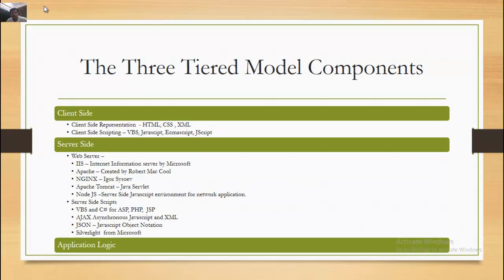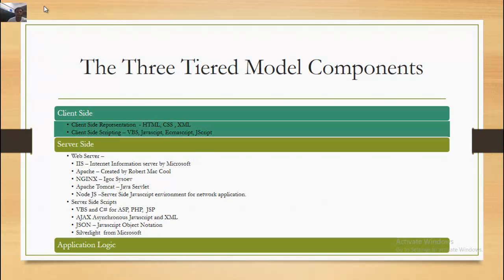In this model, content can be dynamically loaded and saved. The script language used most often on the client side is JavaScript. The 3-Tier Model client-side components include representation formats HTML, CSS, XML, and client-side scripting languages such as VBScript, JavaScript, ECMAScript, and JScript.